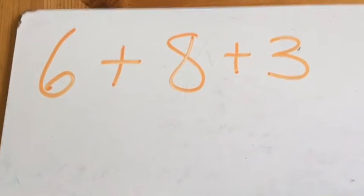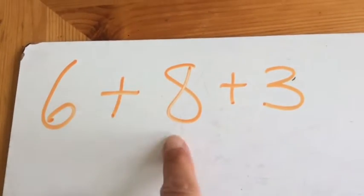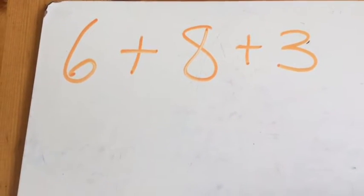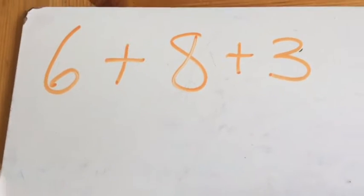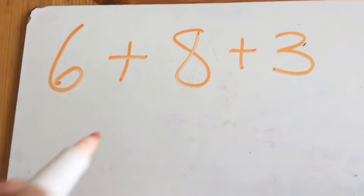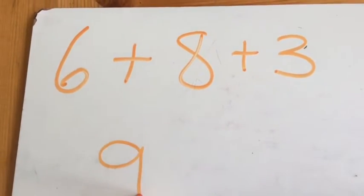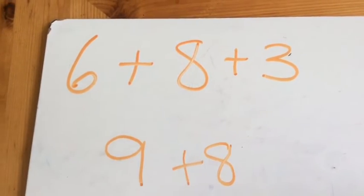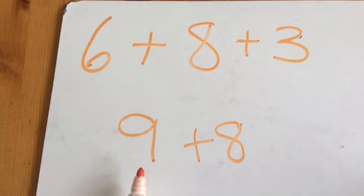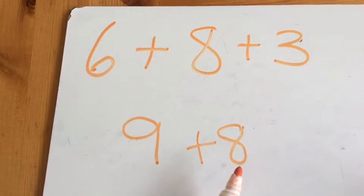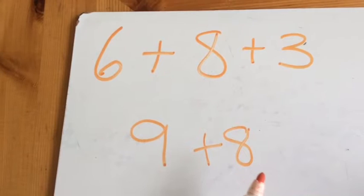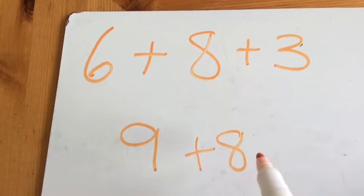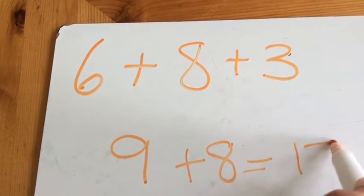So if you have this sum, you don't have to do it in this order: 6 add 8 add 3. You should know some number facts to help you here. Hopefully you know that 6 add 3 is 9. But then you've got the 8 to add on. Now you could do 10 add 8, because that's a no-work question — it's 18. But you should only have added 9, so take one away. The answer must be 17.